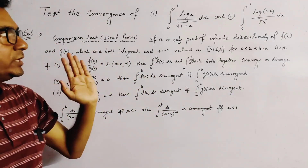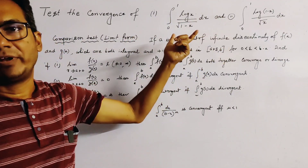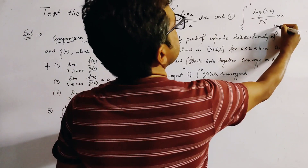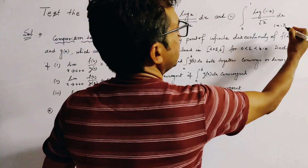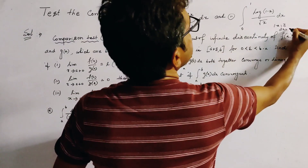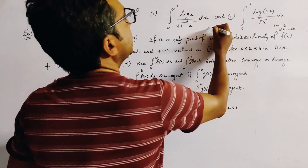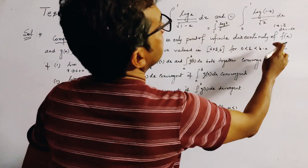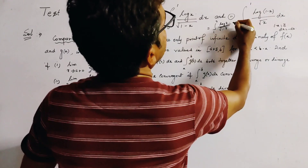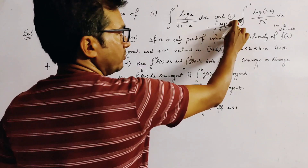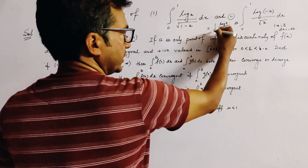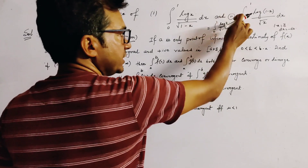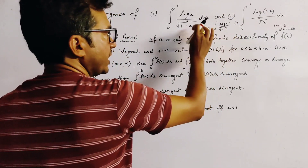If we see very carefully, these two problems have no difference — the two problems are the same. If we put 1 minus x equal to z in the second problem, then dx equals minus dz. The problem reduces to integration 1 to 0 of log z by root(1 minus z) times minus dz. Since we take the minus and the range is alternated, this becomes integration 0 to 1 of log z dz by root(1 minus z), which is the same as the first problem.